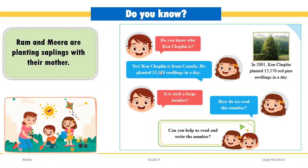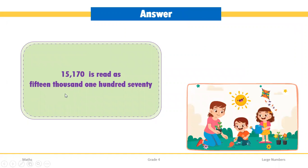Starting from the last digit: it is ones, next is tens, then hundreds, then thousands, then ten thousands. The thousands and ten-thousands will be read combined — that will be 15,100. Similarly, the last two digits will be read combined — that will be 70. So the full number is 15,170. How many red pine seedlings were planted in Adelaide? Starting from the last digit: ones, tens, hundreds, thousands, ten-thousands — it is 15,170 red pine seedlings. So it is written as 15,170.